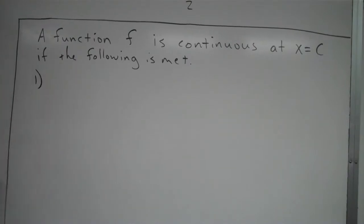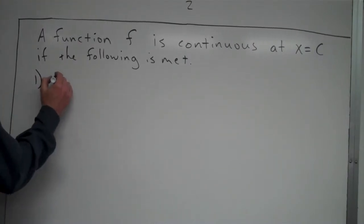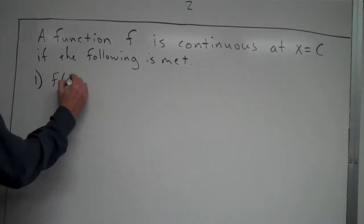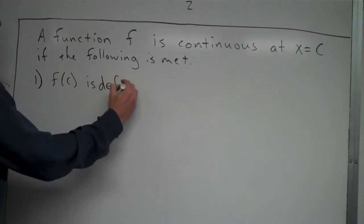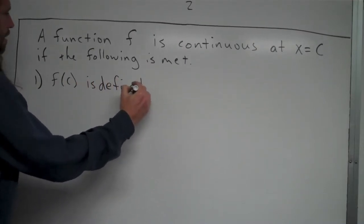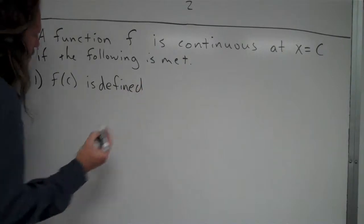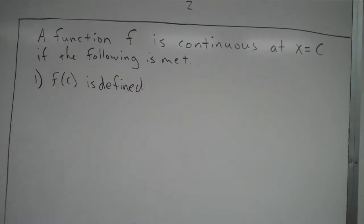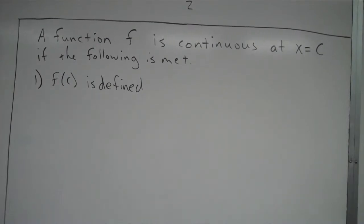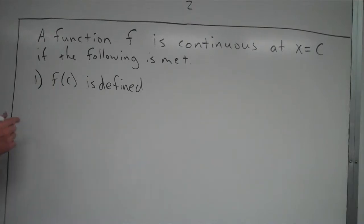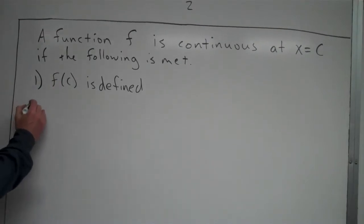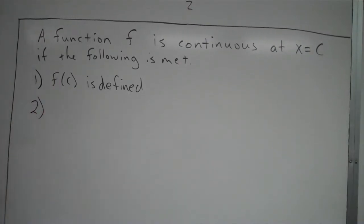The first thing that has to happen is that f of c is defined — meaning that at x equals c, the function f has a value. That's definitely important, so f of c has to be defined. As we look at some graphs in a second, you'll see how these work.